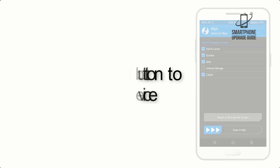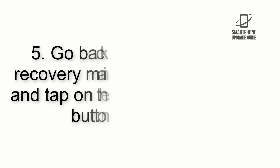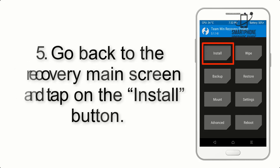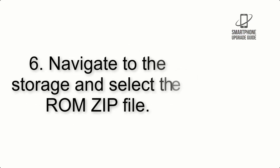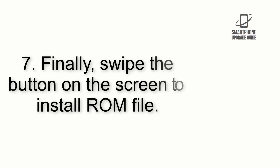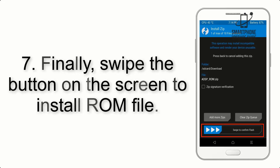Step 4: Swipe the button to wipe the device. Step 5: Go back to the recovery main screen and tap on the Install button. Step 6: Navigate to the storage and select the ROM zip file.